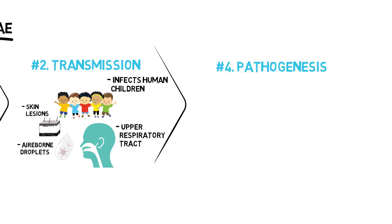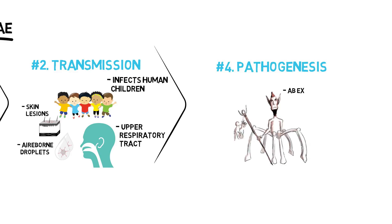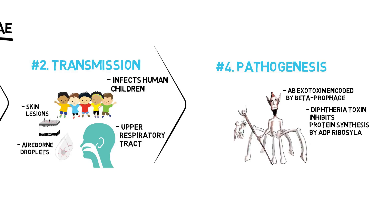Pathogenesis. Exotoxin production is essential for pathogenesis. The AB-exotoxin, encoded by a bacteriophage, inhibits protein synthesis by ADP ribosylation of elongation factor 2, which leads to cell death.